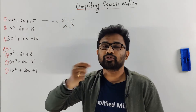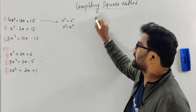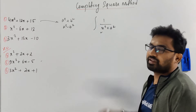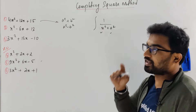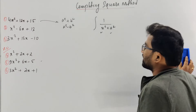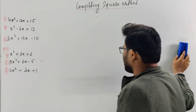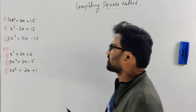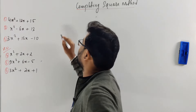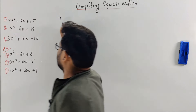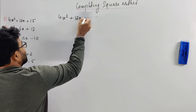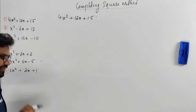This is very important for integration. For example, if you remember integration of 1 over x squared plus a squared — the variable is a, you know the constant. At the same time, even if you want to convert y equal to f of x, you need this method. So let me take the first question: 4x squared plus 12x plus 15.